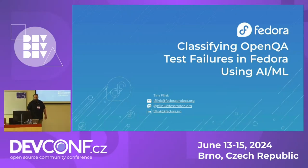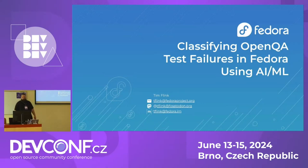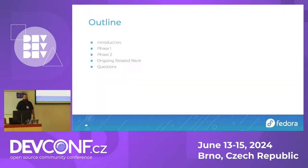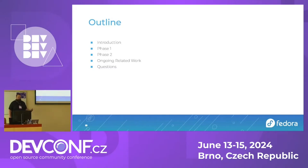My name's Tim. I'm going to be talking about some stuff I've been working on in Fedora, which is classifying OpenQA test results and doing that using some AML techniques. I'm looking to do a bit of an introduction, talk about phase one, phase two, some of the ongoing related work that I've been doing, and leave some time at the end for questions.